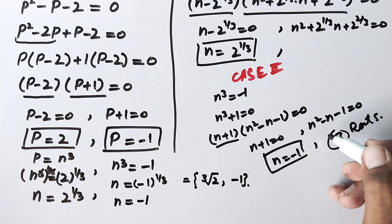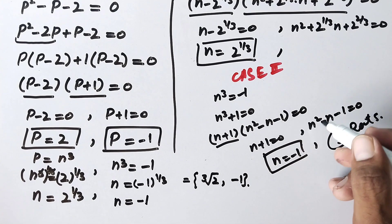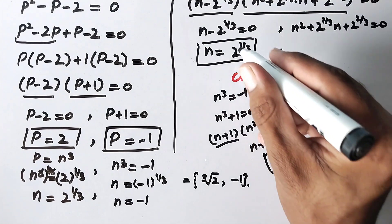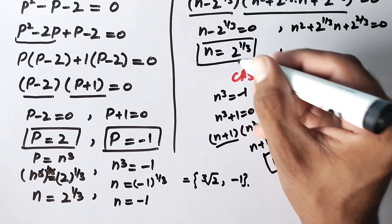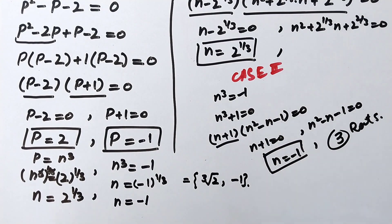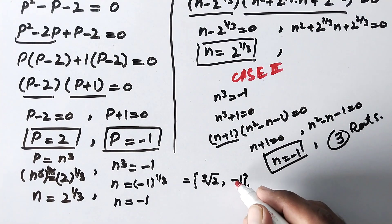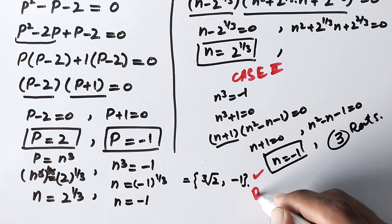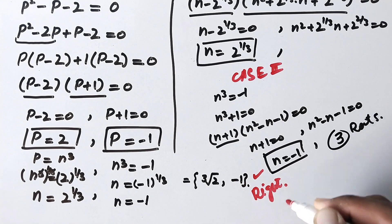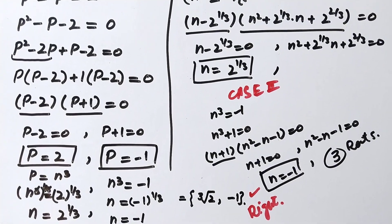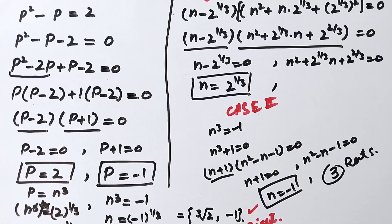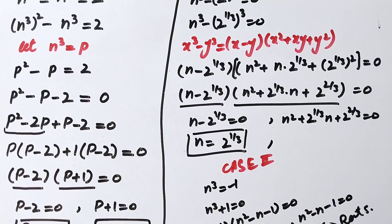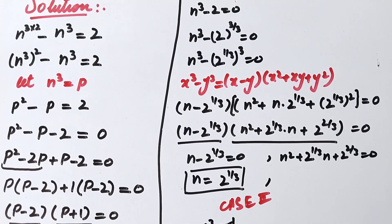The remaining roots from the quadratics may be complex or have no real solution. So the two real roots we found earlier are correct. I hope you liked the video. Please subscribe to my channel for more videos. Thanks for watching, take care, bye.